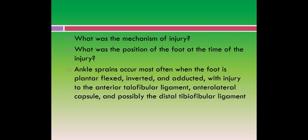We have to ask the patient what was the mechanism of injury. If the patient has any history of trauma, we need to find out the mechanism of injury and what was the position of the foot at the time. This can tell us which anatomical structure got injured. Ankle sprains occur most often when the foot is plantarflexed, inverted and adducted, with injury to the anterior talofibular ligament (ATFL), anterolateral capsule and possibly the distal tibiofibular ligament.